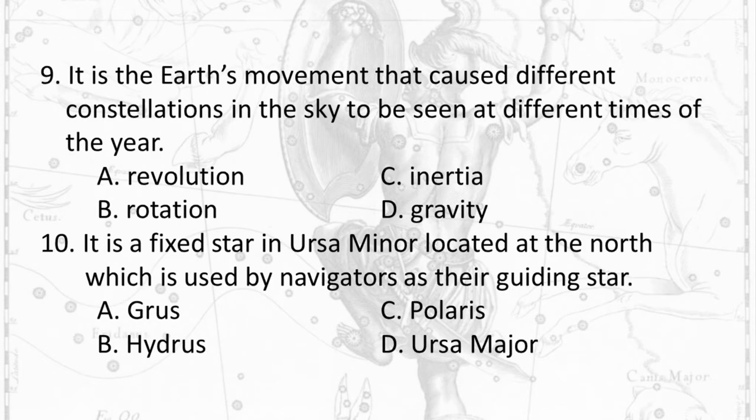Question 9: It is the Earth's movement that caused different constellations in the sky to be seen at different times of the year. A. Revolution B. Rotation C. Inertia D. Gravity.